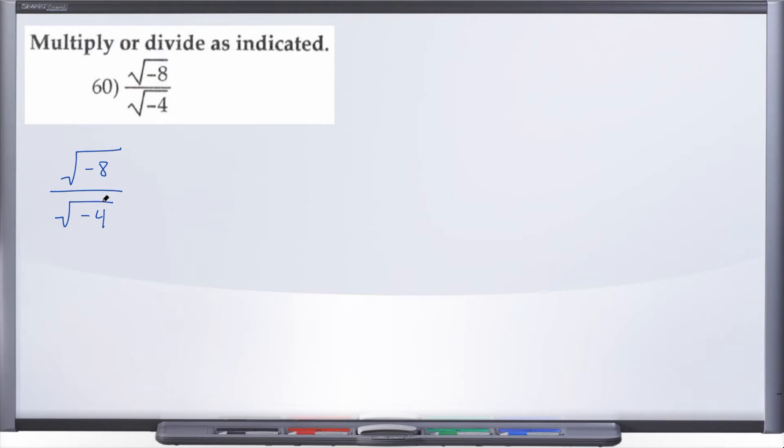You can rewrite it as a single radical, right? So instead of two separate radicals we'll just have one single radical, and under that radical will have negative 8 over negative 4.